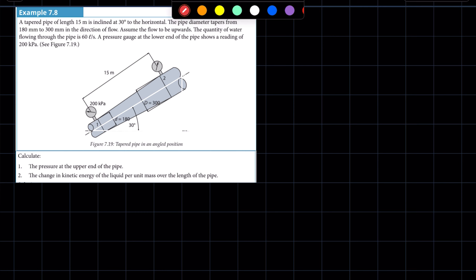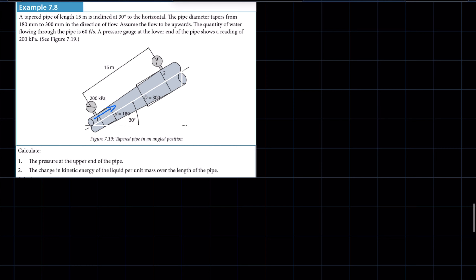As they've indicated, the flow of water is upwards, meaning the lower end of the pipe is the entry and the upper end of the pipe is the exit, so the water is flowing in this direction. The lower end of the pipe we're going to name as point 1 and the upper end of the pipe as point 2.